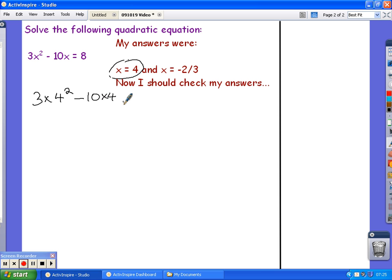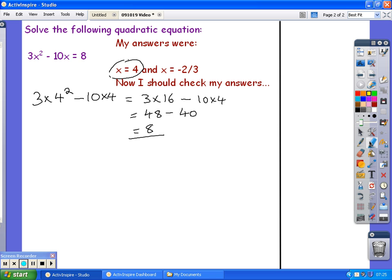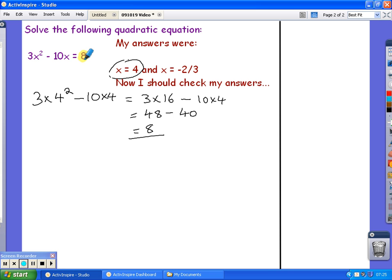I'm just going to evaluate the left-hand side where all the x's are. So, 3 times 4 squared is 3 times 16. And then I need to take away 10 times 4, which is 48, subtract 40, which is 8. And that matches with what I had on the original equation on the right-hand side. So, the first answer is correct.